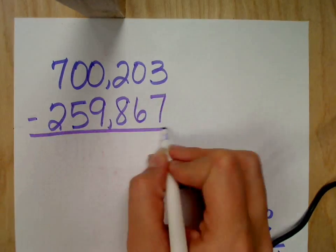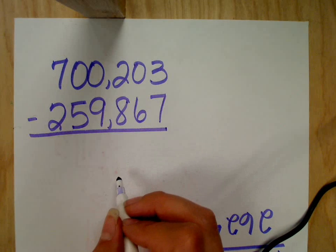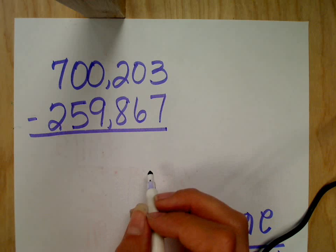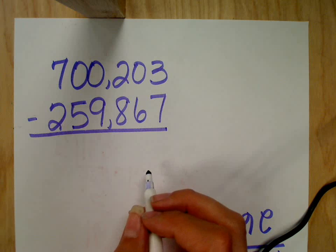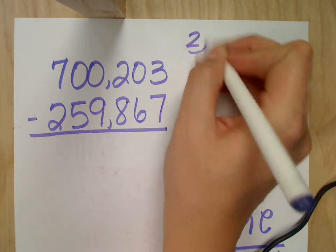259,867. And we're subtracting. The rule is always going to be the same when borrowing from zeros. So I'll give you a moment to write this down. And again, this is like a number two on a comp test.